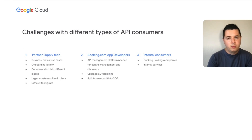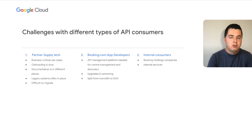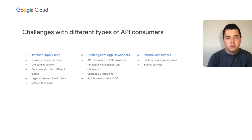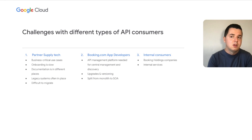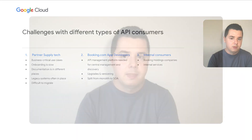For app developers at Booking.com, we have challenges in upgrades and versioning, and also challenges in splitting from a monolith codebase to service-oriented architecture. Finally, as part of the Holdings company, we have internal consumption of APIs — service-to-service consumption inside the Booking Holdings portfolio.